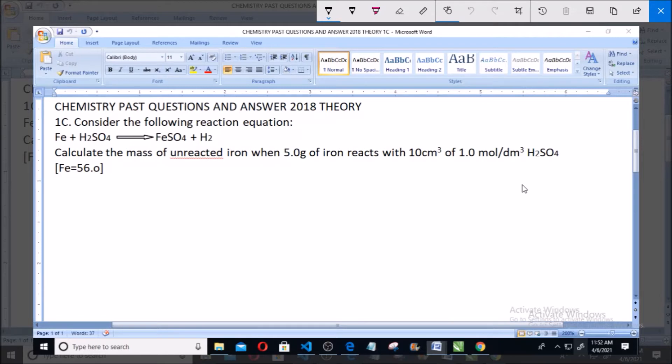Now to the solution. Let's see this. Equation of reaction is iron plus H2SO4 giving iron sulfate plus H2. Now mass of iron reacted.